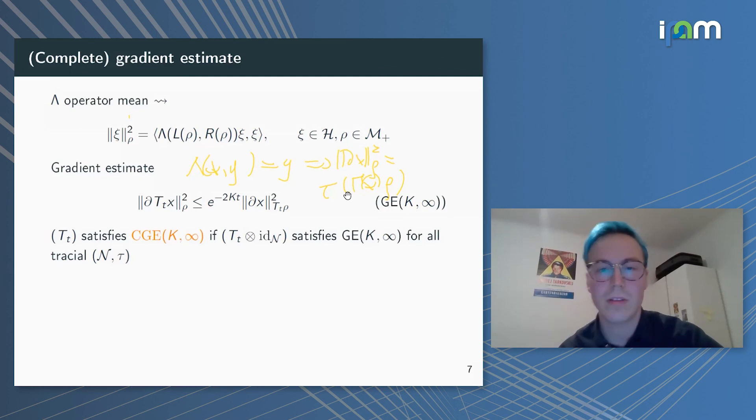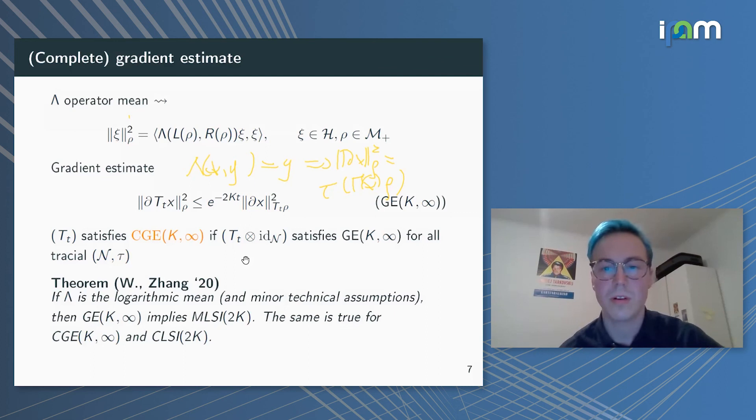In this specific case, we get the classical Bakry-Émery criterion back, but for logarithmic Sobolev inequalities, unfortunately we cannot work with this trivial mean in this case. We need the logarithmic mean. First, one more definition: once again, we want tensor stability, so we say that T_t satisfies CGE(k,∞) if T tensorized with the identity satisfies GE(k,∞) for all tracial von Neumann algebras. Then the result, which builds on all this previous work I've mentioned before—there are similar results for manifolds and for graphs and finite-dimensional QMS—is if this λ, this operator mean, is the logarithmic mean, then our gradient estimate GE(k,∞) implies the modified logarithmic Sobolev inequality. And the same result then of course holds for these complete, these tensorized versions with C's in front.